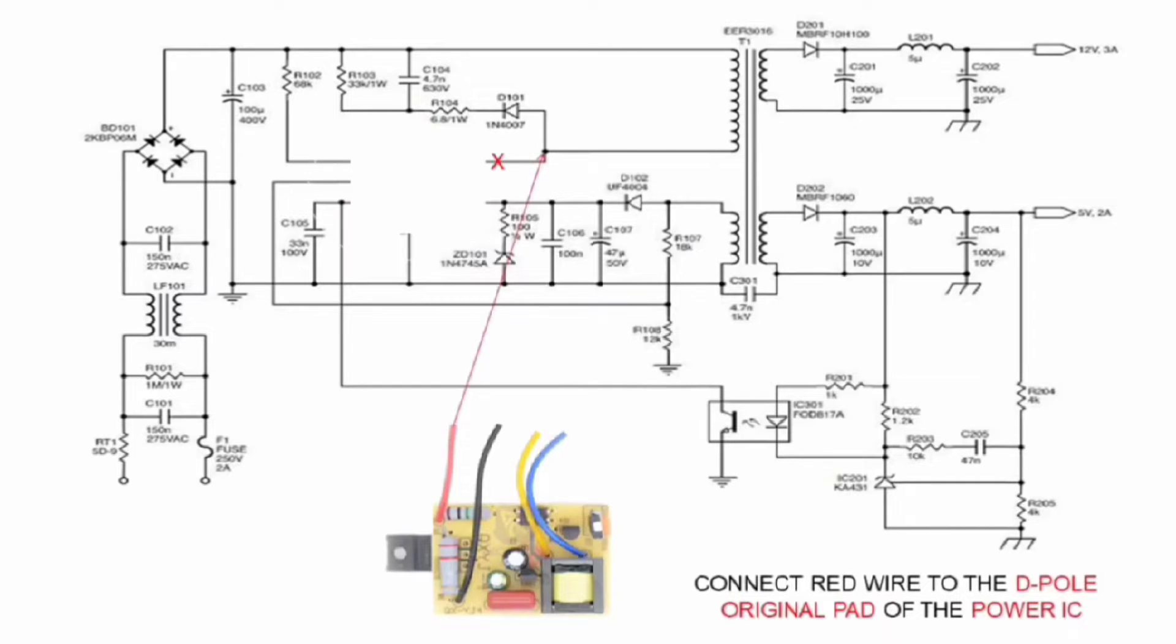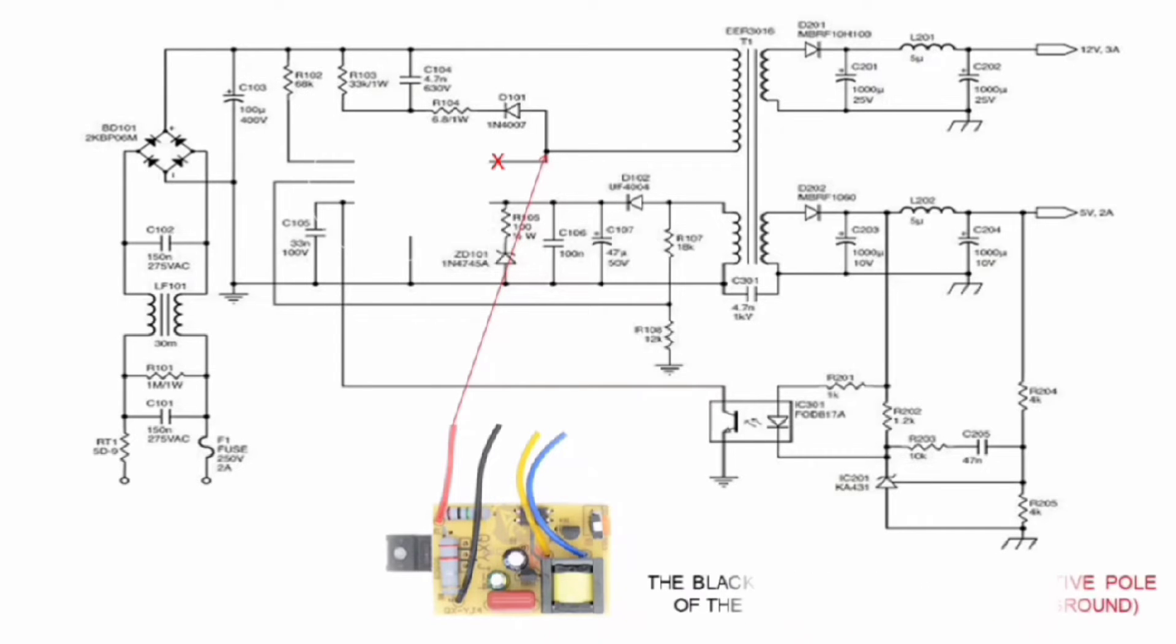Connect the red wire to the D-pole original pad of power IC. The black wire connect to the negative pole of the 300 volts filter capacitor, hot ground.